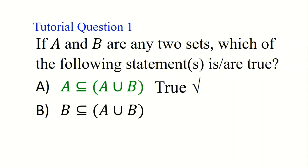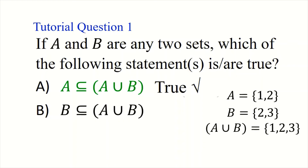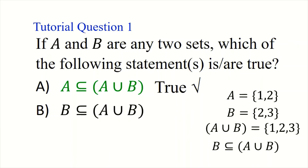Now let's take a look at the second option. A union B means there is a set X such that X is in A or B. So if X is in A or B, it means B is already included, which means B is a subset of A union B.